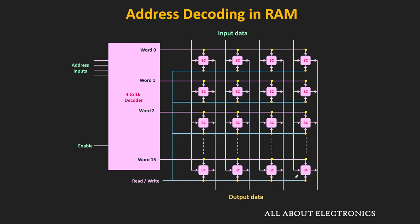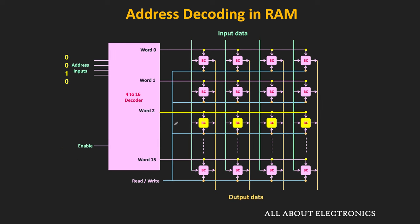Let us see how a specific group of binary cells is selected and how read and write operations are performed. Suppose the address applied to the decoder is 0010 — as soon as the enable signal is applied to the decoder, it will select the second word, enabling all binary cells corresponding to that word. If we want to perform the read operation, the read signal is made logic 1, and since the second word is selected, only that word responds.